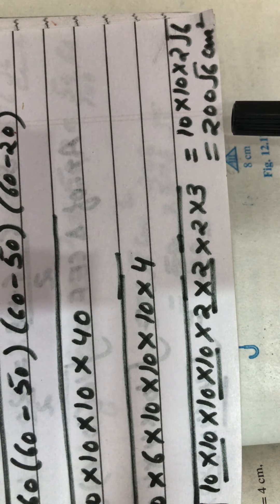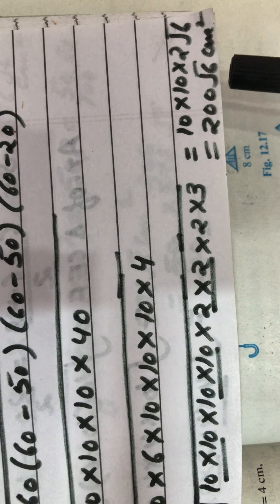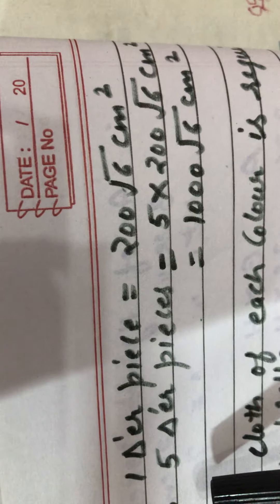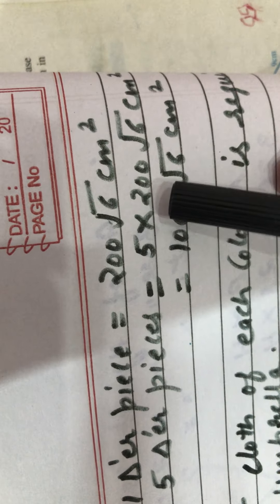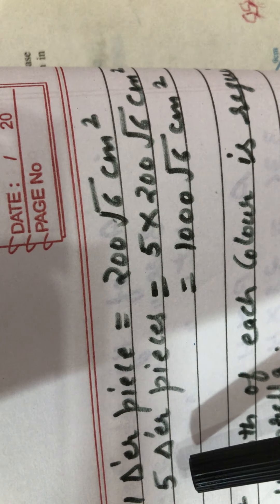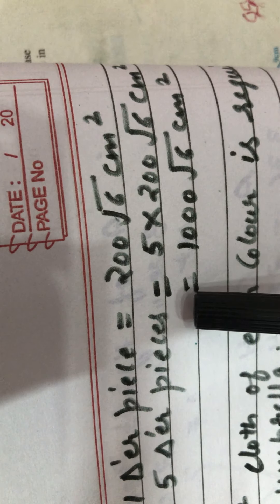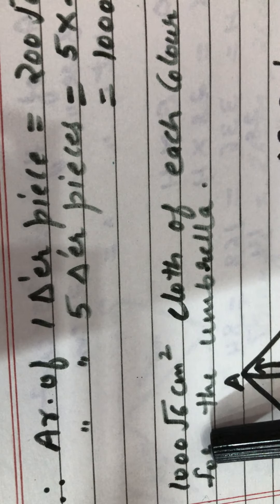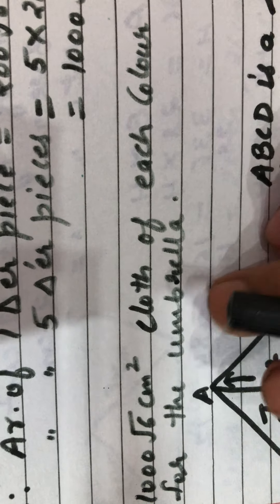After taking the square root, the area of one triangular piece is 200√6 cm². The area of five triangular pieces will be 5 × 200√6 = 1000√6 cm². This is the area for one color — suppose red. Five red triangular pieces have area 1000√6 cm². Similarly, the five green triangular pieces will also be 1000√6 cm². So 1000√6 cm² of cloth of each color is required for the umbrella.